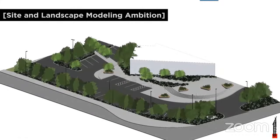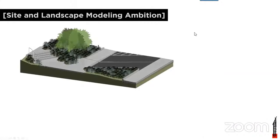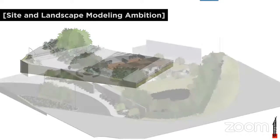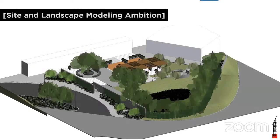Now we want to look at what the ambition for landscape modeling could be. This is a model Lauren put together showing all the typical elements we don't always see in a Revit site and landscape model: sidewalks and roads that are sloped properly, curb cuts, curbs, and planting that is properly bound and populated throughout the entire model. These are the images that tell the story we want to tell with Foreground, which we've been working on for the last nine months.